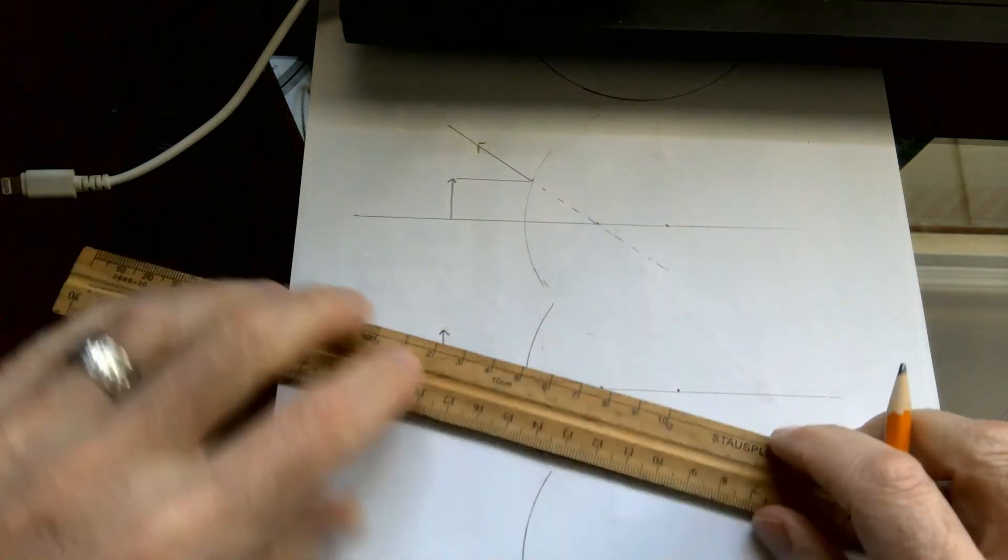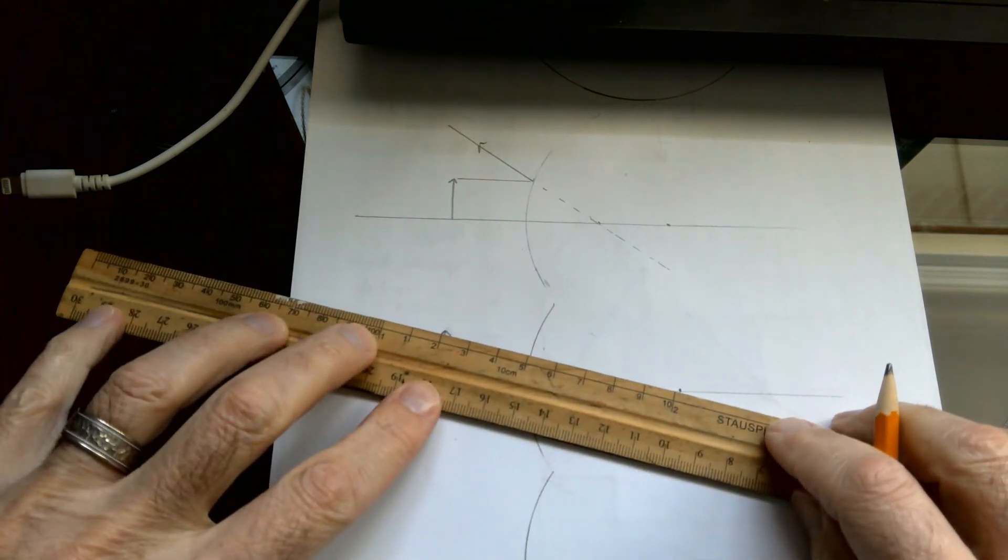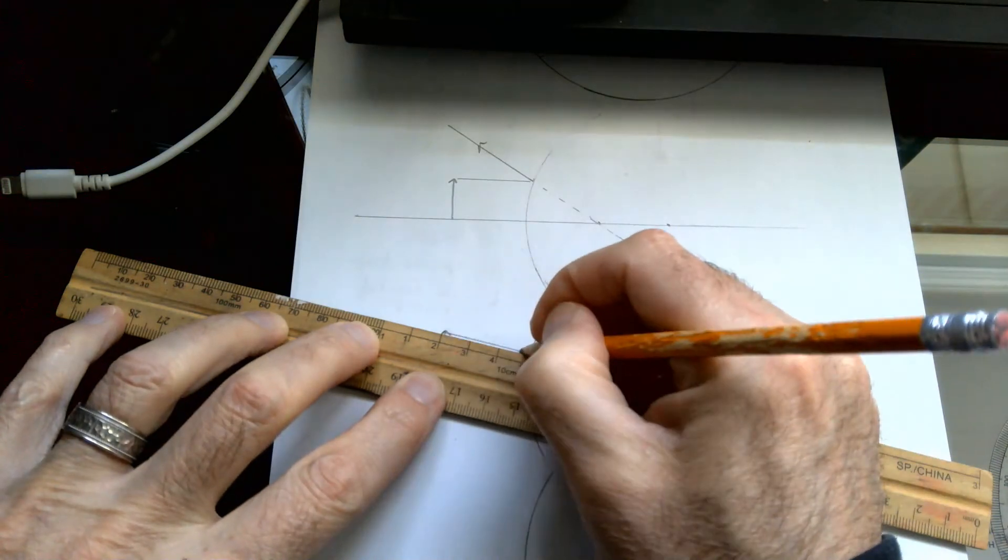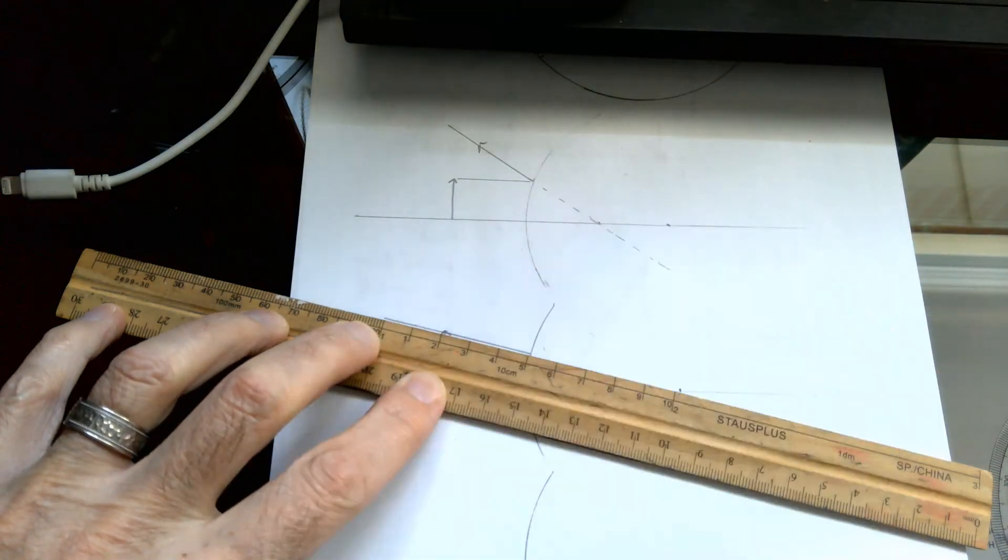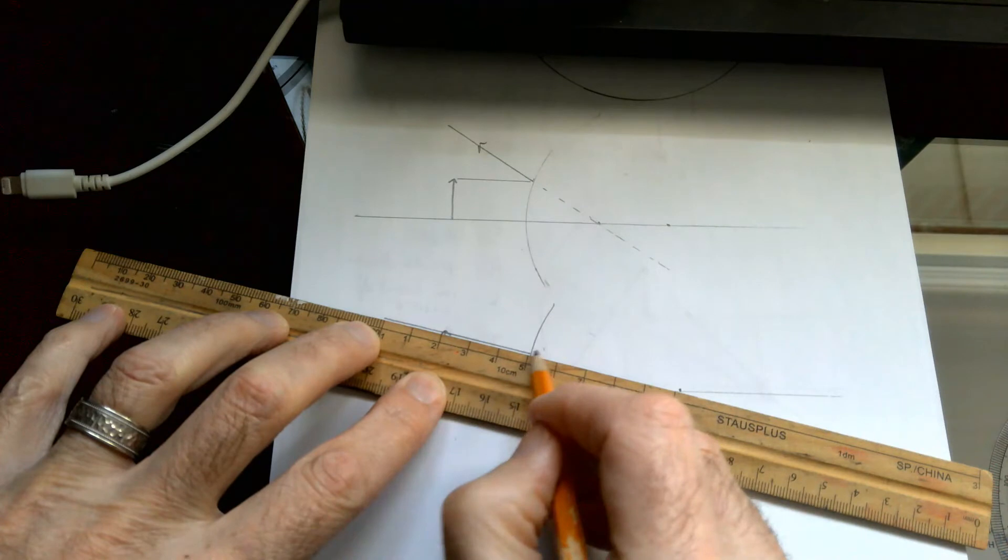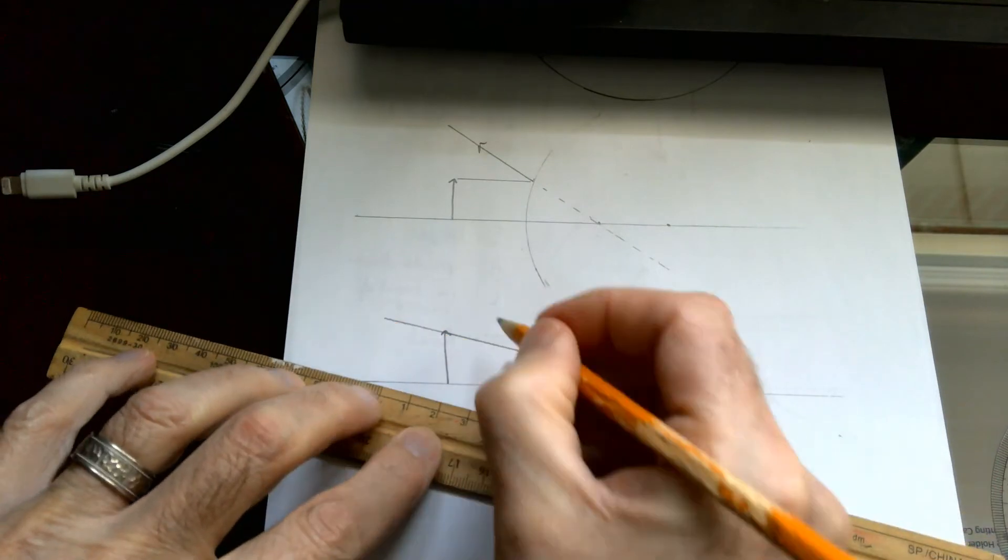Take your object. Aim straight at the center of curvature. This ray of light will bounce back on itself. So it'll hit the mirror, and it'll come right back at itself.